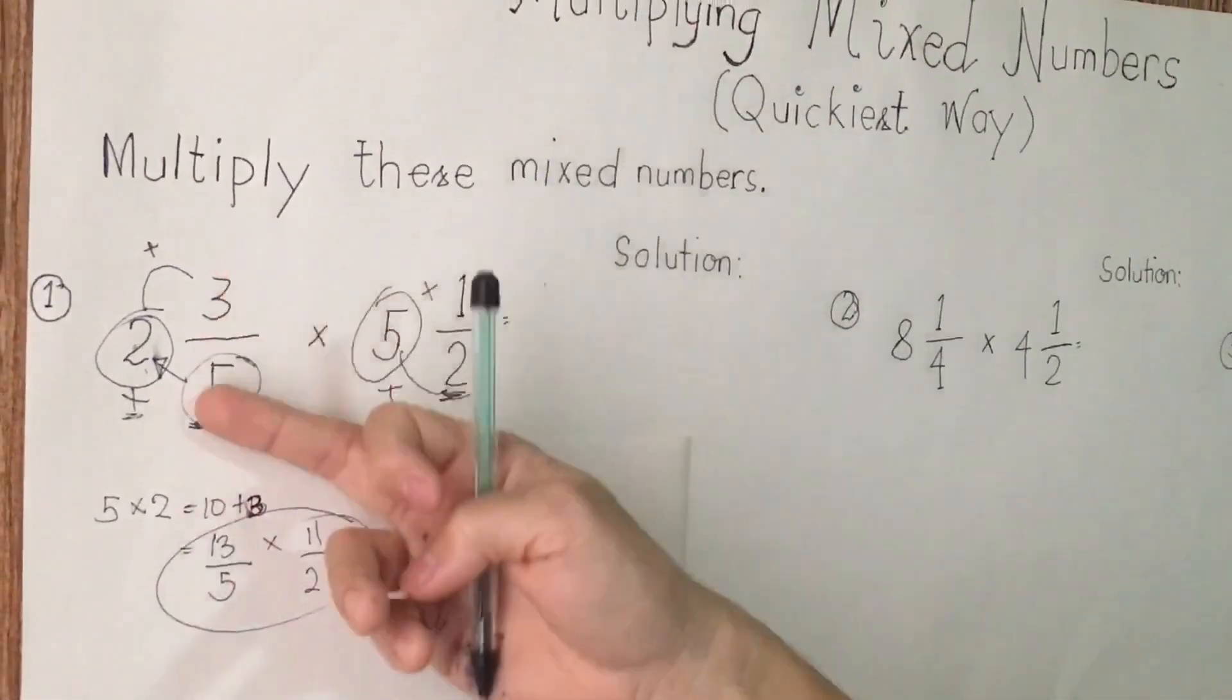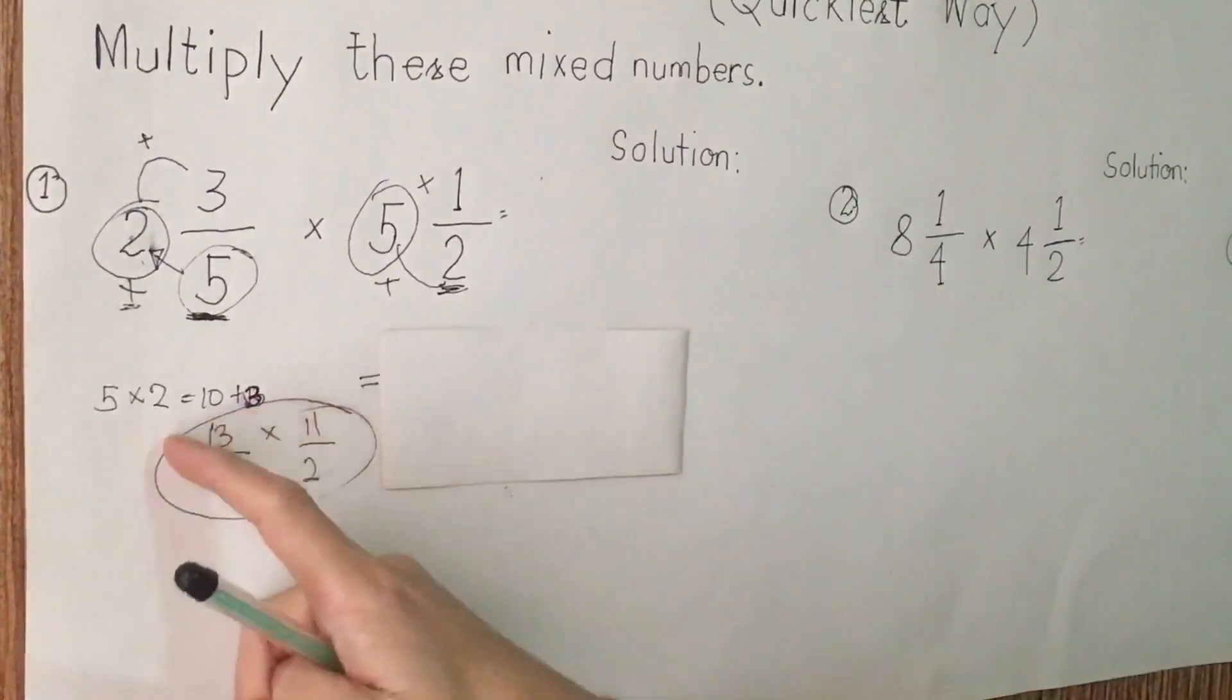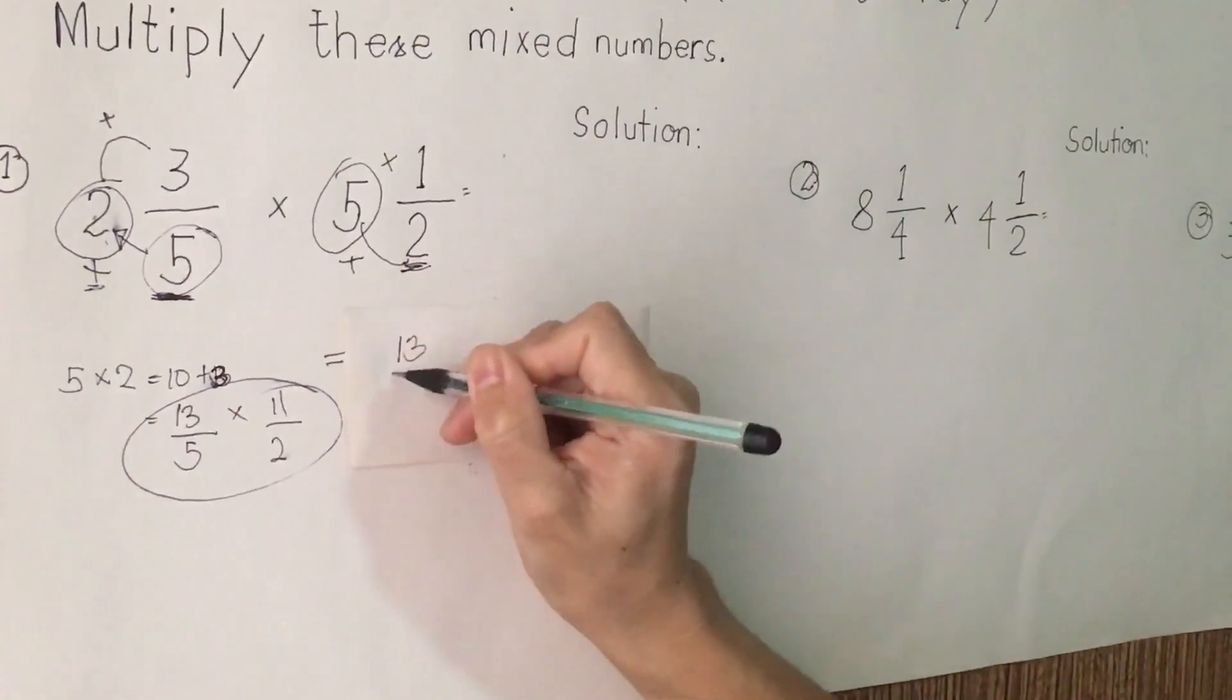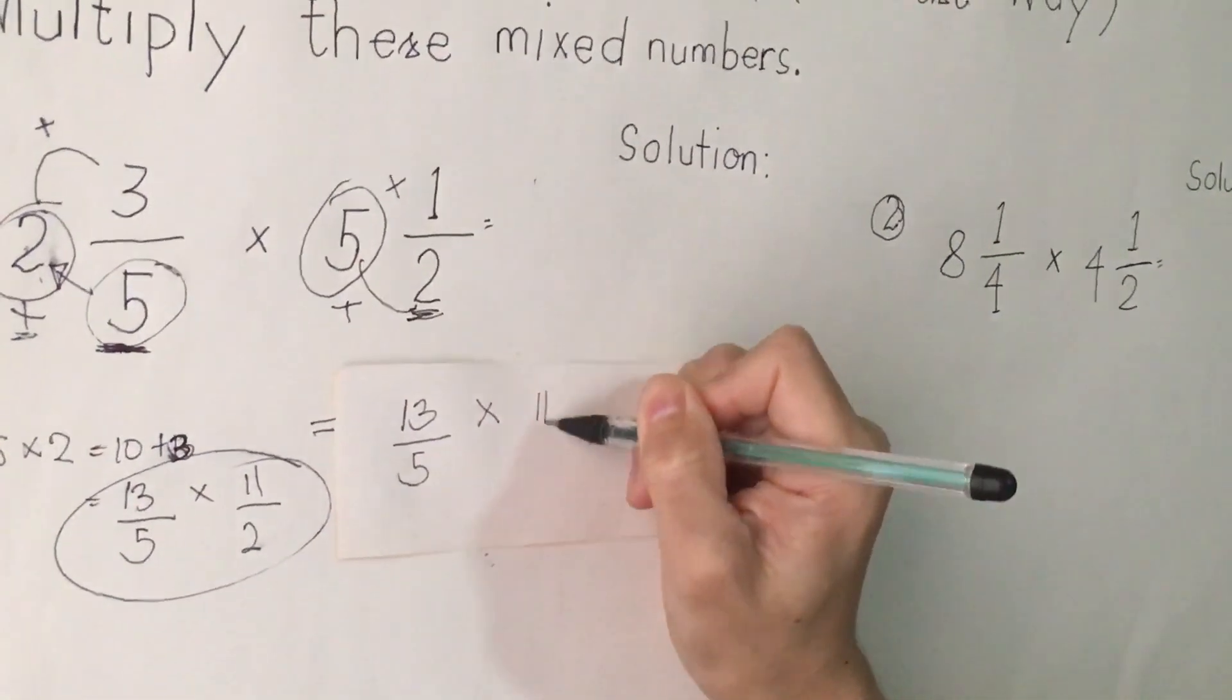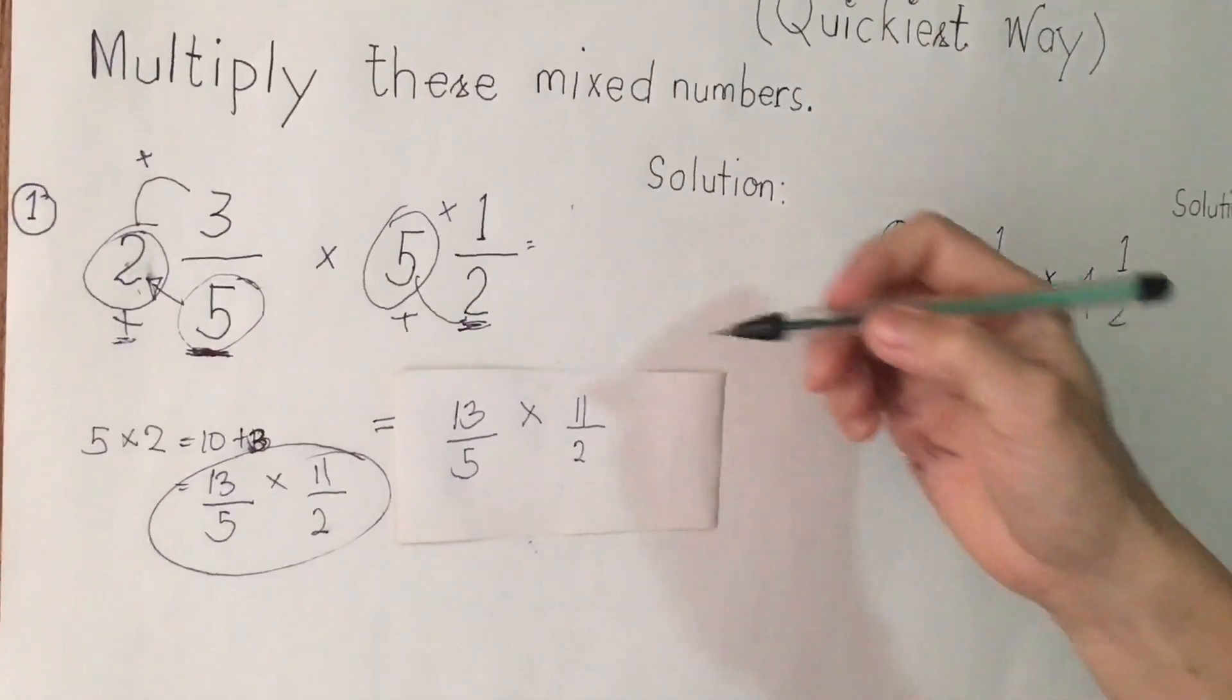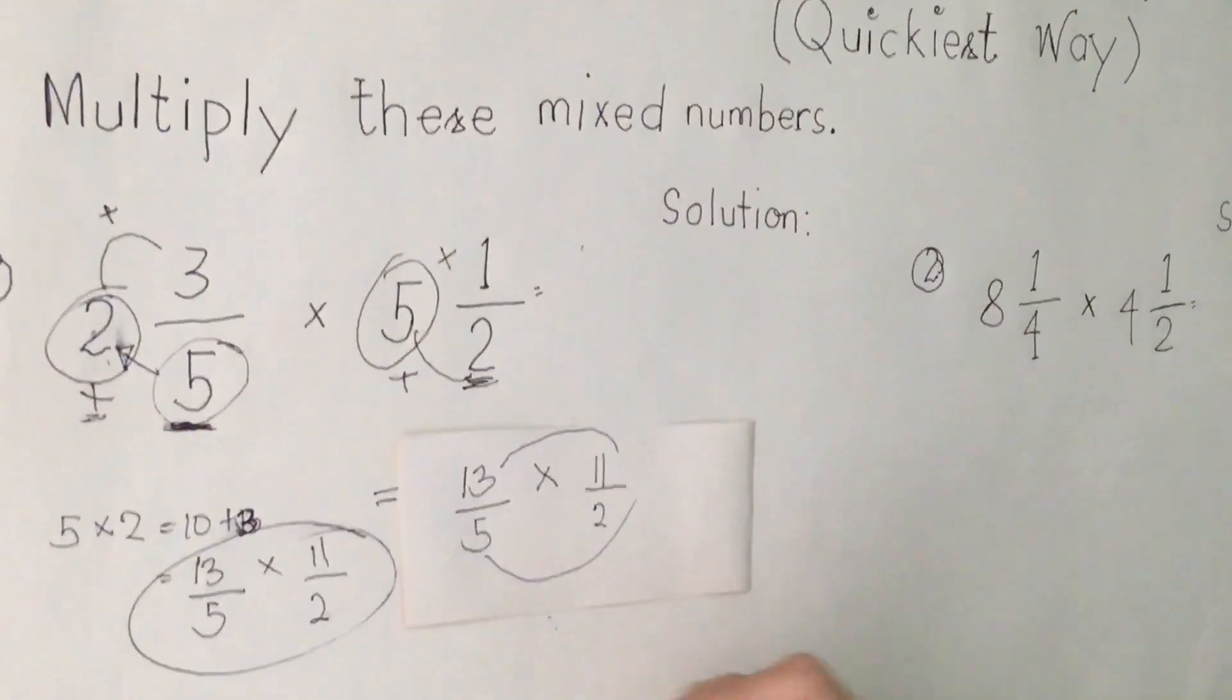We are already converted to what we call improper fraction. I am going to write here 13 over 5 times 11 over 2. The next thing we do is we are going to multiply both numerators to numerators and denominators to denominators.